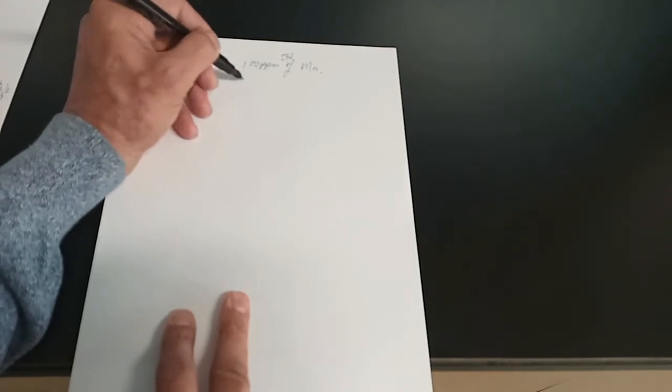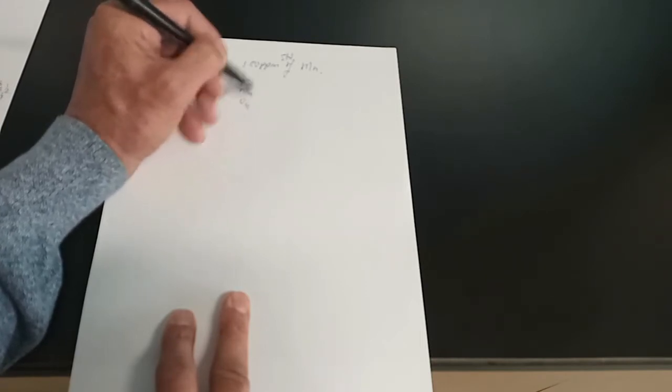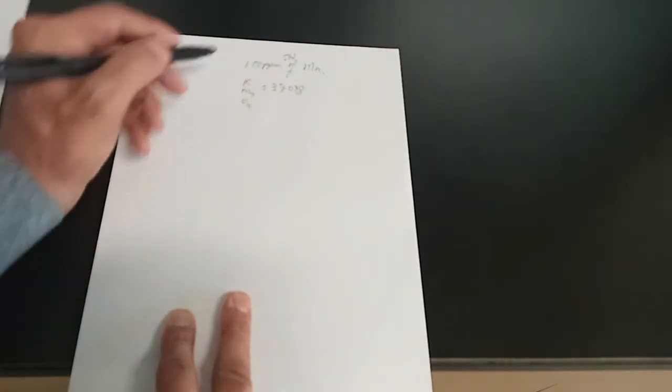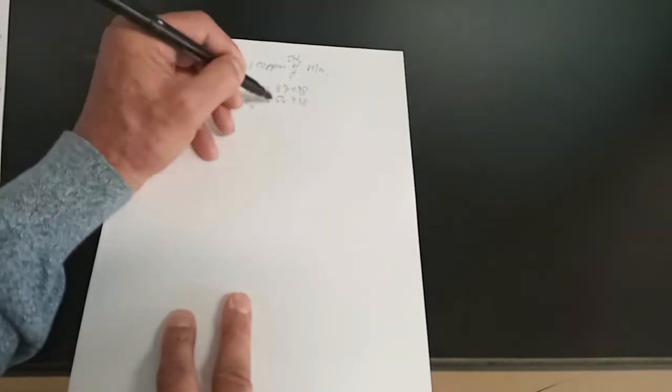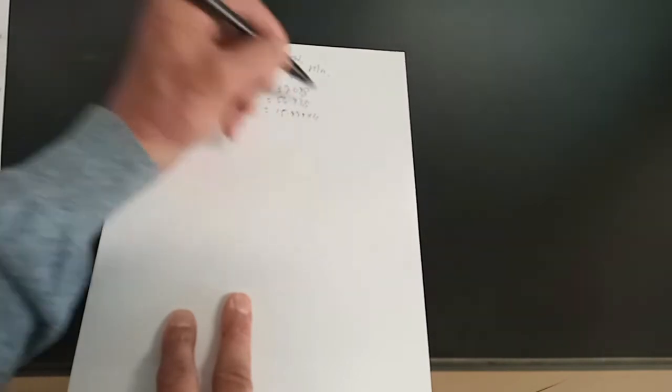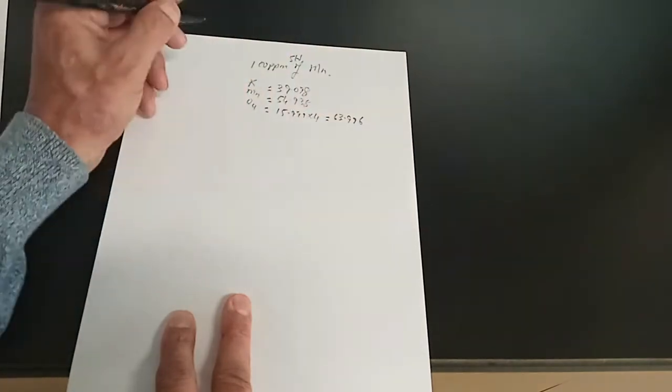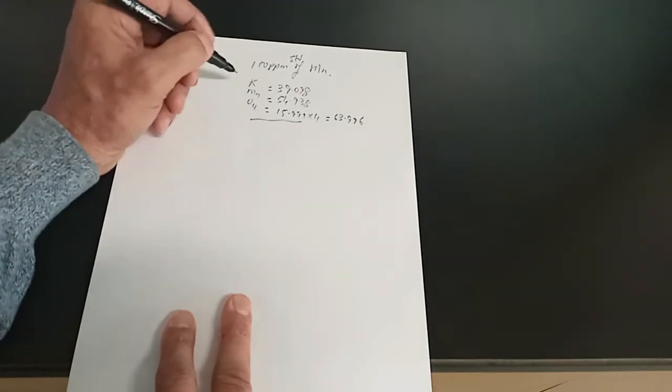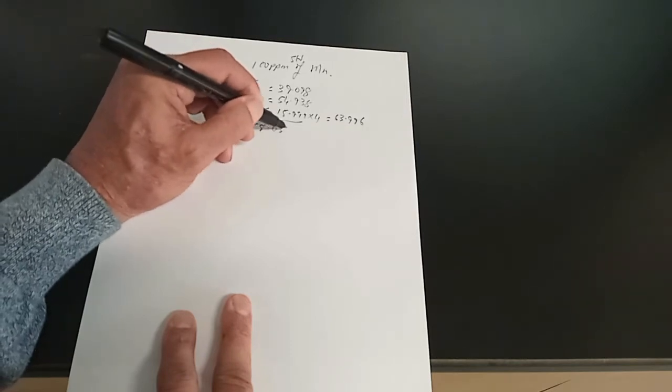So KMnO4: potassium is 39.098, manganese is 54.938 grams, and this is 15.999 times 4 which makes it equal to 63.996. So add this up for the molar mass of KMnO4 and that makes it equal to 158.032 grams.